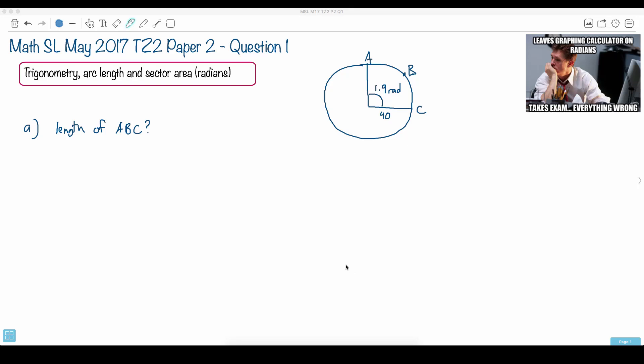This question is about trigonometry, and it has to do with arc length and sector area. We're given a circle here, and this is the center of it. I'll call it O. There we go, the O region. And it goes like this. There's A, then O, then C, and we're given that the radius is 40 units here.